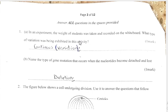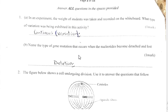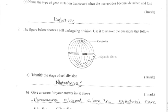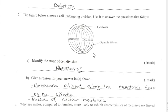The type of gene mutation that occurs when nucleotides become detached and lost is called a deletion.